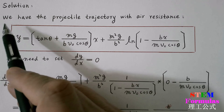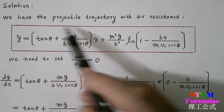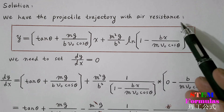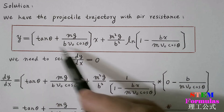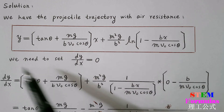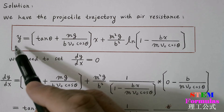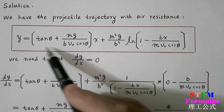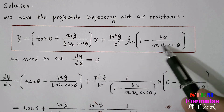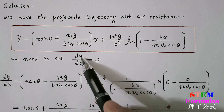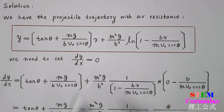Solution. We have the projectile trajectory with air resistance. This is the projectile trajectory equation — that is, y as a function of x. We need to set dy/dx equal to 0.